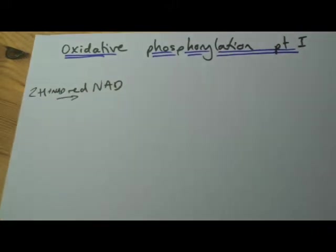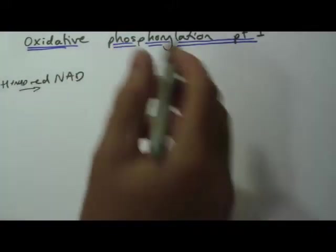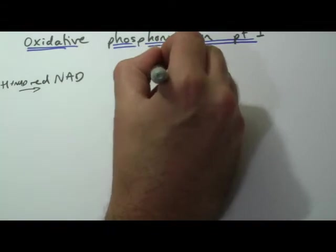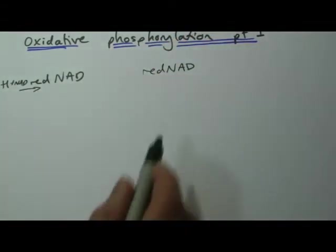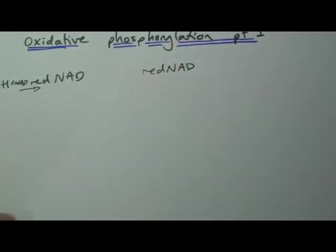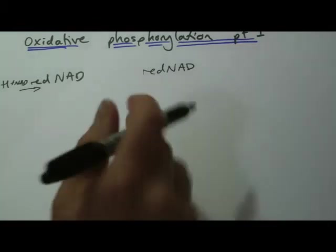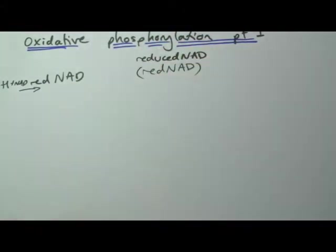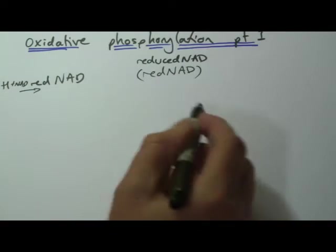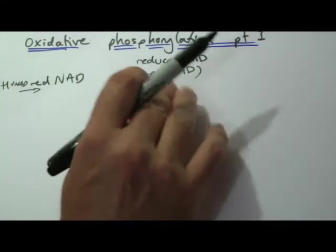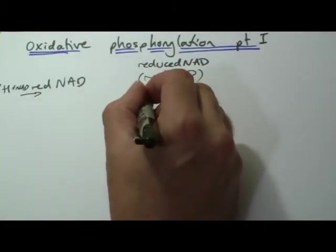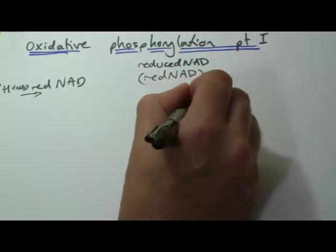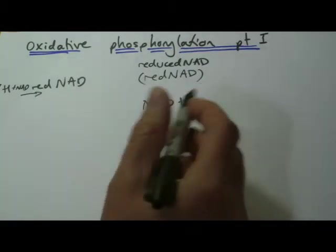The NAD becomes reduced NAD. Now you'll see it written in several ways. The one that's favored in your textbooks, and I would suggest you use, is to put reduced NAD. If you're worried about should I write the whole thing out, if you're on an exam I would write the whole thing out first and then afterwards you can put red NAD and they will accept that. You will also see it written like this from some sources. It means the same thing.